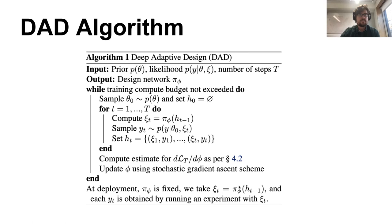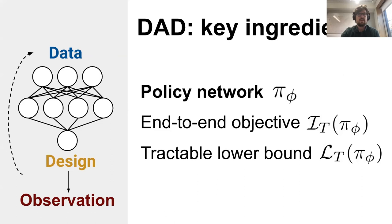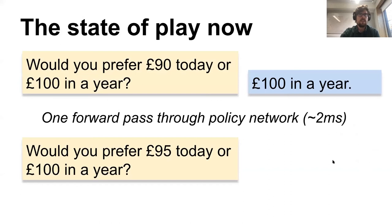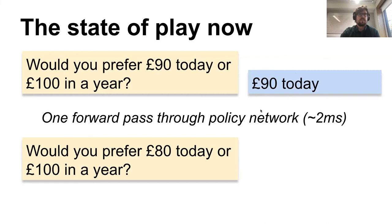Once we've done training up front, we can deploy this for a psychology trial or online survey automatically. Someone might be asked first, do you want £90 today or £100 in a year? Our policy tells us to ask that question. If they answer £100 in a year, we pass those answers through the policy network — which takes just one or two milliseconds — and we're ready to ask the next pertinent question. If they had instead chosen £90 today, the policy would have chosen a different second question. This is adaptive design learned to run in real time.